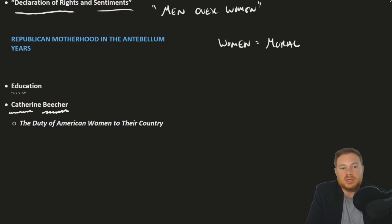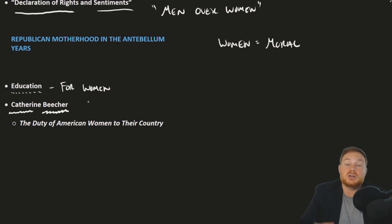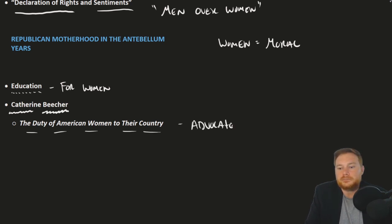One thing that Catherine Beecher advocated for was education specifically for women, so they could be in charge of raising the next generation of Americans. Catherine Beecher, daughter of Protestant preacher Lyman Beecher, wrote 'The Duty of American Women to Their Country,' which advocated for women's education.